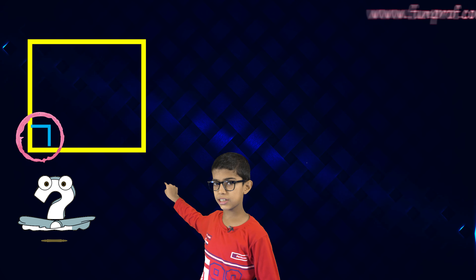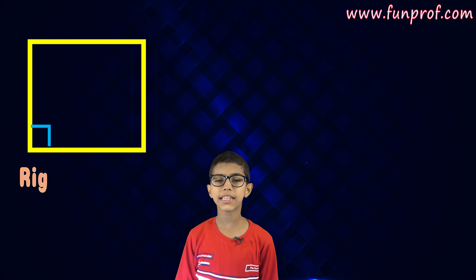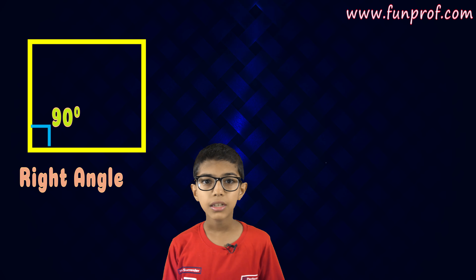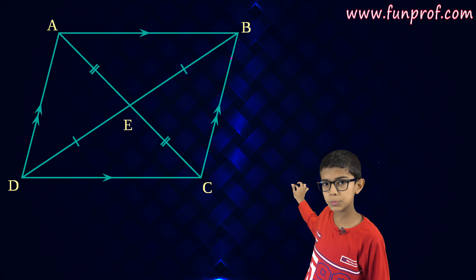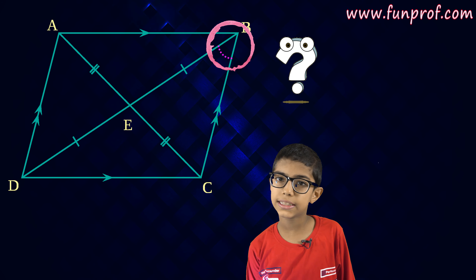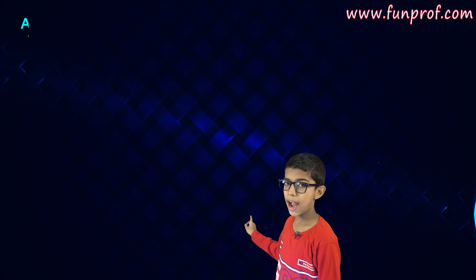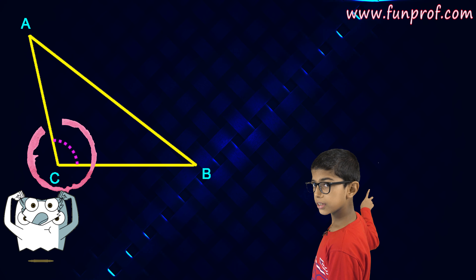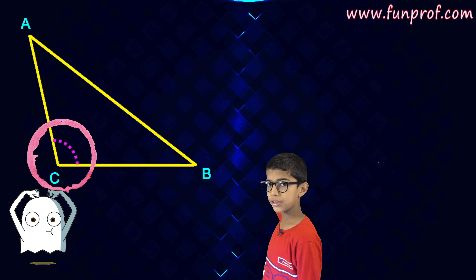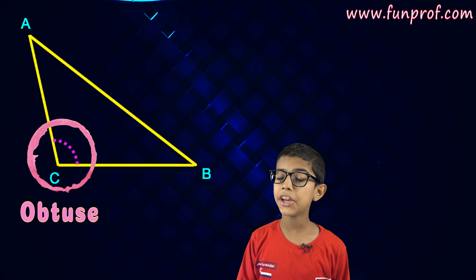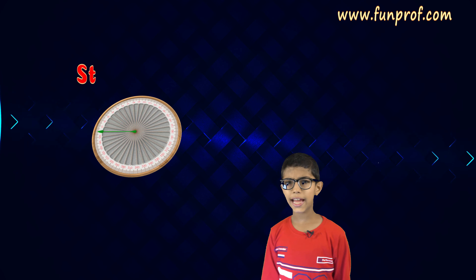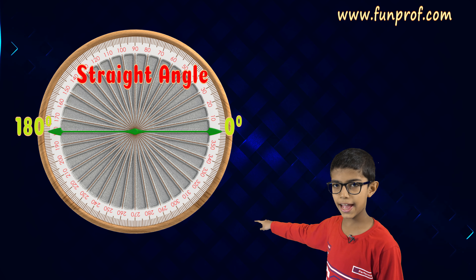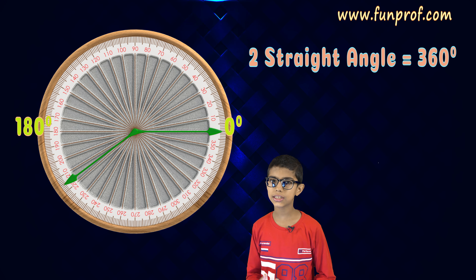I will tell you the things and you will tell me which angle is present in them. The corner of a square — which angle is present here? Yes, it is a 90 degree angle. Next, a parallelogram — which angle is present here? Yes, it is an acute angle. And in this triangle, this is an obtuse angle.